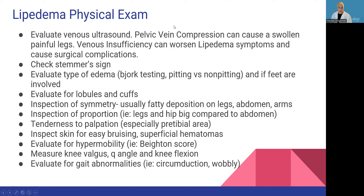The physical exam starts with a venous Doppler ultrasound to rule out competing diagnoses such as pelvic vein compression or other venous obstructions or insufficiency that can cause similar symptoms. Then checking for a Stemmer sign, evaluating the edema, evaluating for lobules and cuffs, inspecting for symmetry and proportion, tenderness on palpation, inspecting the skin for bruising, evaluating for hypermobility, measuring knee mechanics, and evaluating for gait abnormalities.